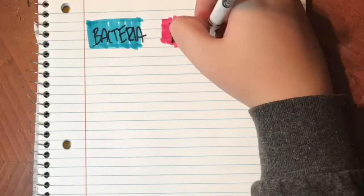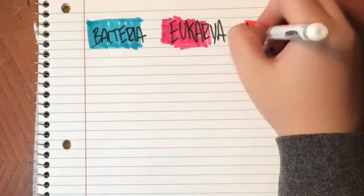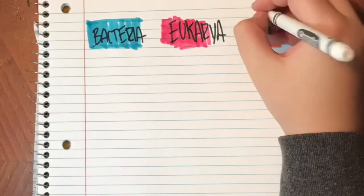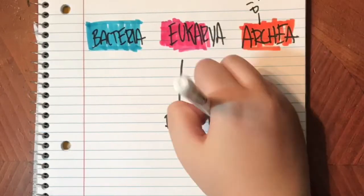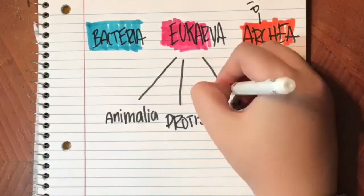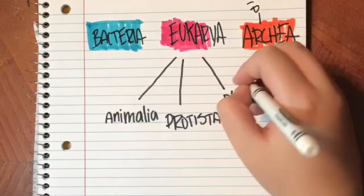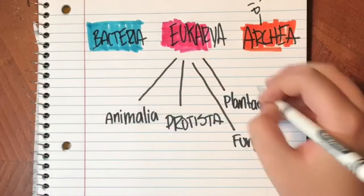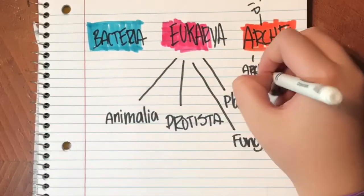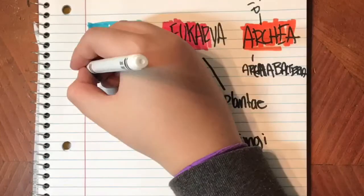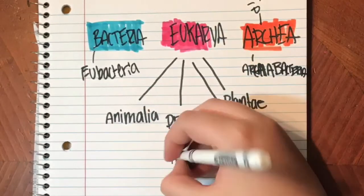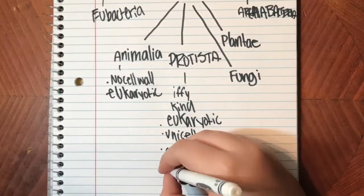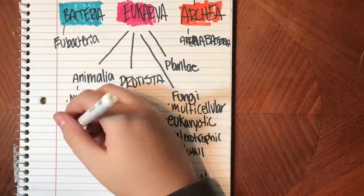Let's do Bacteria, Eukarya, and Archaea. Eukarya has four kingdoms: Animalia, Protista, Fungi, and Plantae. Archaea has Archaebacteria, and Bacteria has Eubacteria. You can see me categorizing each cell by their characteristics.